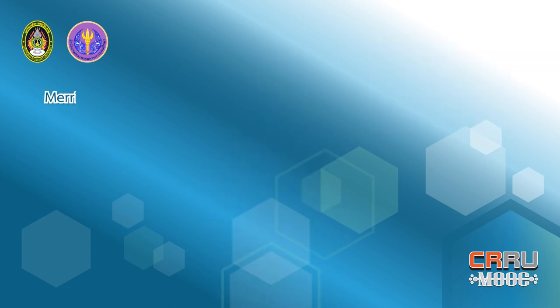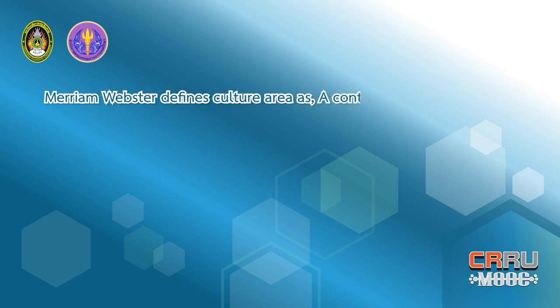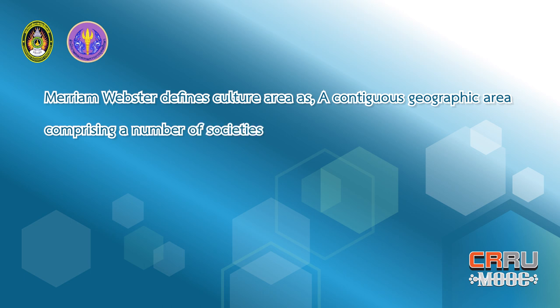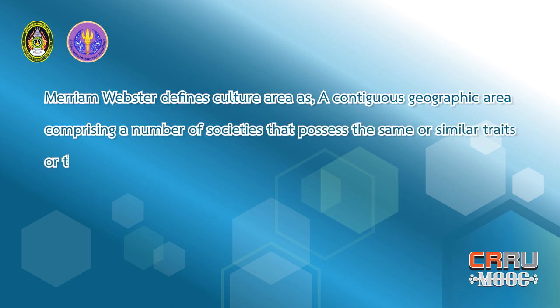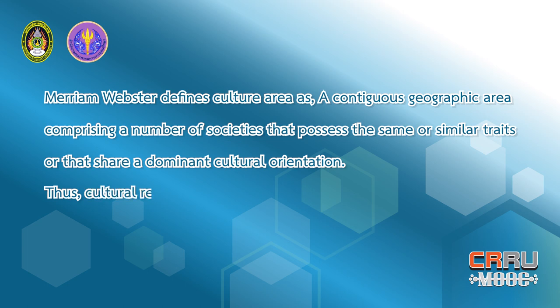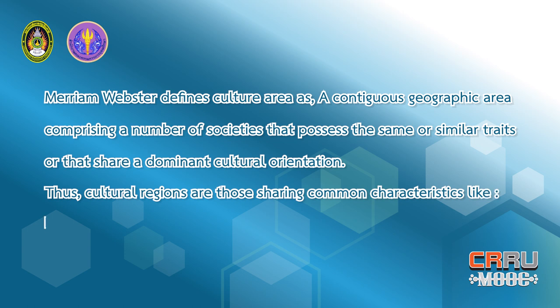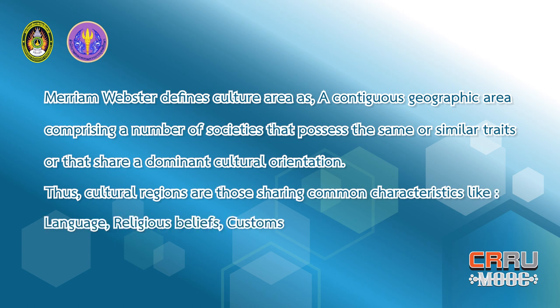Third: regional culture. Merriam-Webster defines a cultural area as a contiguous geographic area comprising a number of societies that possess the same or similar traits, or that share a dominant cultural orientation. Thus, cultural regions are those sharing common characteristics like language, religious beliefs, customs, and practices.